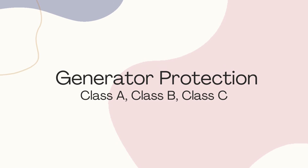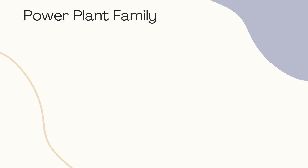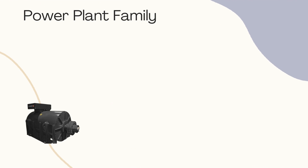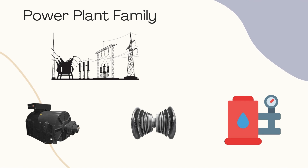Welcome viewers. Today we will understand what Class A, Class B, and Class C protection of an alternator is. First, we need to understand the basics of a power plant. A power plant is like a family — there are four main members: generator, turbine, boiler, and switchyard. These members always work together to provide electricity to the user end.